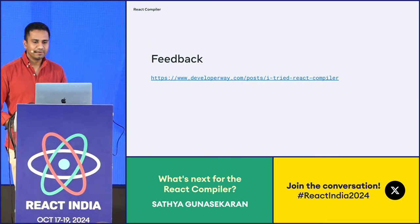Another example of this platform mission is the recent work on inlining JSX element creation. Instead of using the current JSX Babel plugin to transform JSX, the compiler can actually do this transformation — it automatically converts JSX into the output of the JSX runtime call. This is still experimental; we're going to run a local experiment at Meta, see the performance impact, and then ship it.